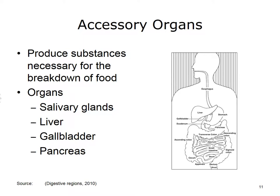Generally, the function of the accessory organs of the digestive system is the production of substances necessary for the chemical breakdown of food. As mentioned earlier, the accessory organs include the salivary glands, the liver, the gallbladder, and the pancreas. Now let's take a look at the specific functions of each of these organs.